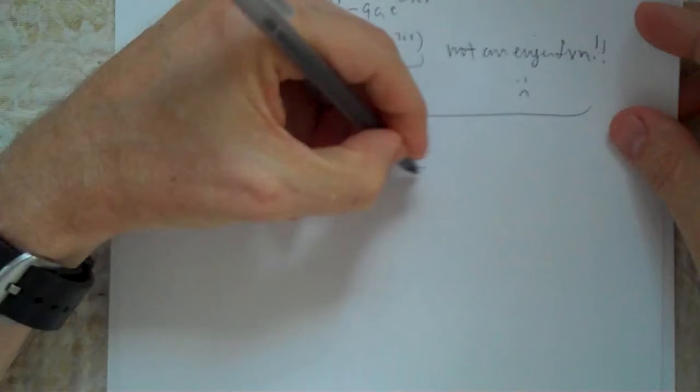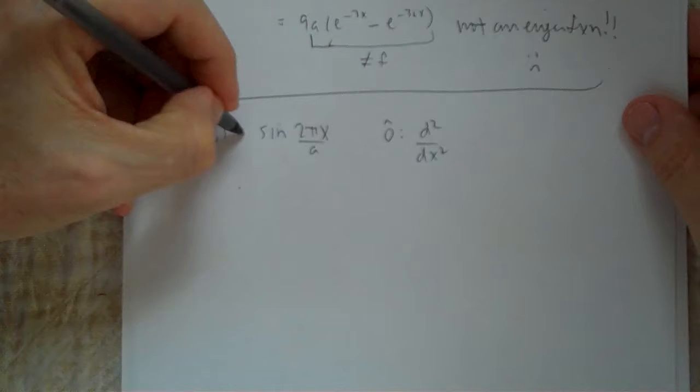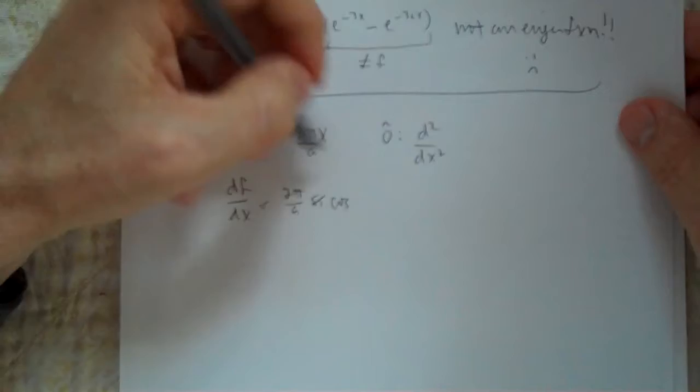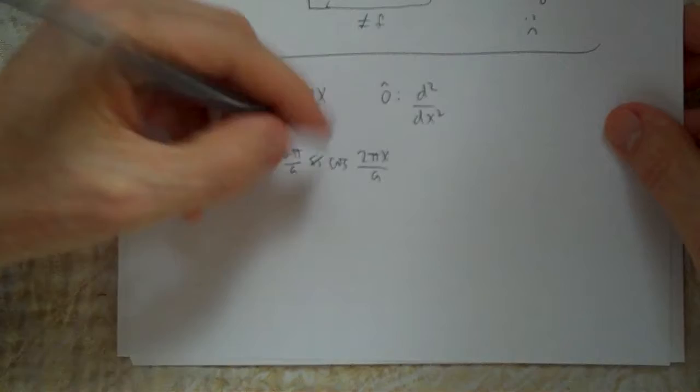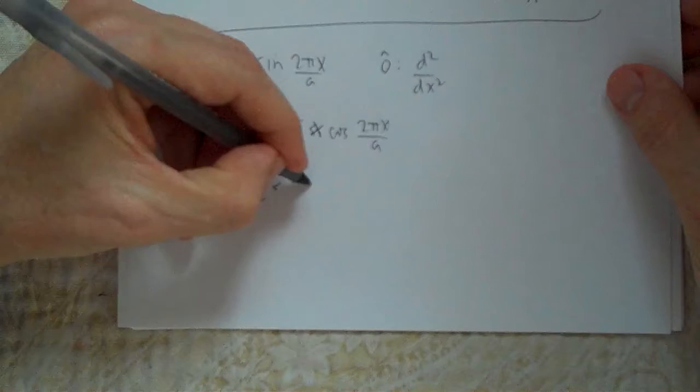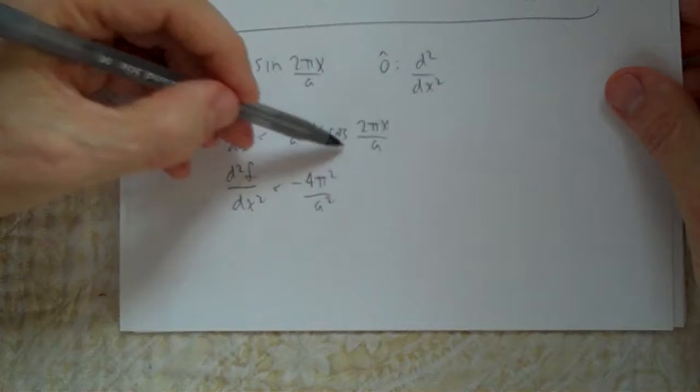Let's call this f. Then df/dx equals (2π/a) cosine(2πx/a) - using u-substitution. The second derivative is then minus 4π²/a² times sine(2πx/a), because the derivative of cosine is minus sine.